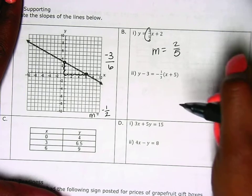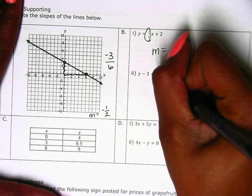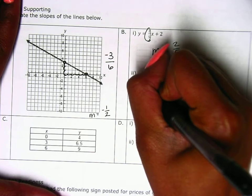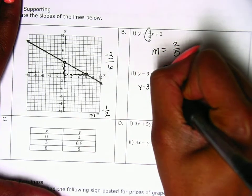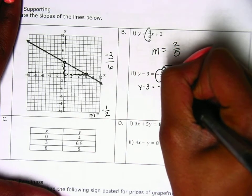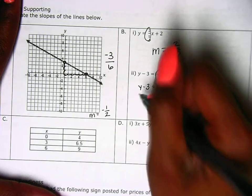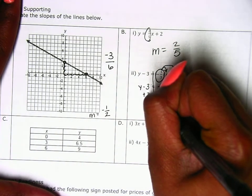Now here, it's in point slope form. So to figure out our slope, I have to take this number and distribute. So y minus three is negative one-third x minus five over three. To get y by itself, I'm going to do plus three on both sides.